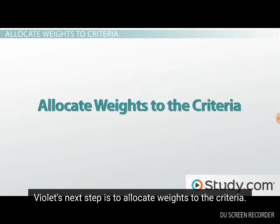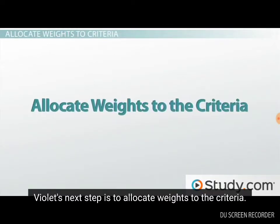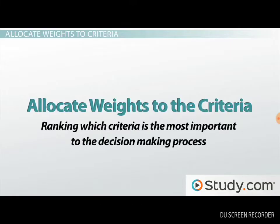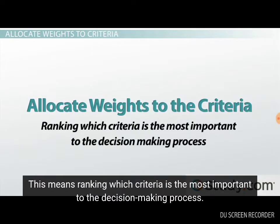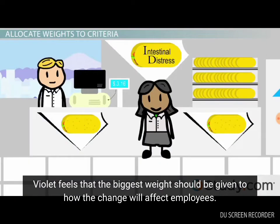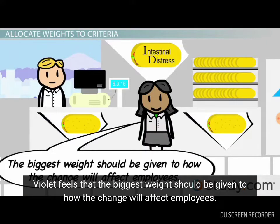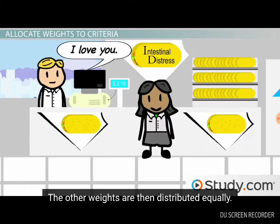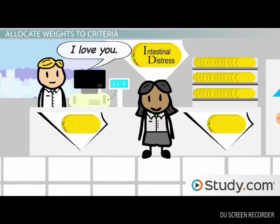Violet's next step is to allocate weights to the criteria. This means ranking which criteria is the most important to the decision-making process. Violet feels that the biggest weight should be given to how the change will affect employees, and the other weights are then distributed equally.